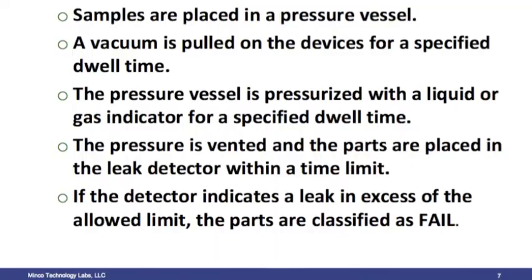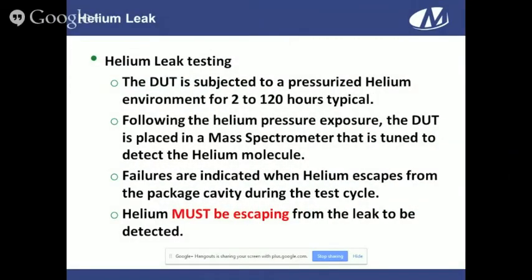In helium leak testing, the device is subjected to pressurized helium gas for two to 120 hours, depending on the test condition. Following the helium exposure, the part is placed into a mass spectrometer that pulls a hard vacuum on the device and tries to detect helium being pulled out of the part. Failure is indicated when the mass spectrometer detects helium — it can detect very fine amounts of helium molecules. Importantly, helium must be escaping from the package leak to be detected.